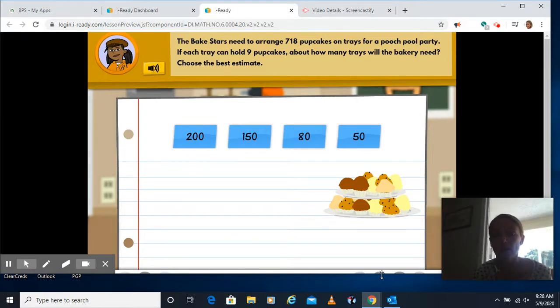So the first one says the bake stars need to arrange 718 cupcakes on trays for a pooch pool party. If each tray can hold nine cupcakes, about how many trays will the bakery need? Choose the best estimate. Well, when I look at this one, what pops out to me is I can make compatible numbers.